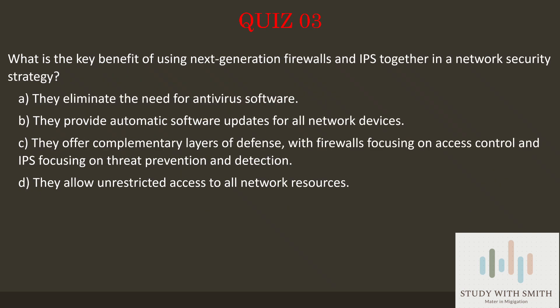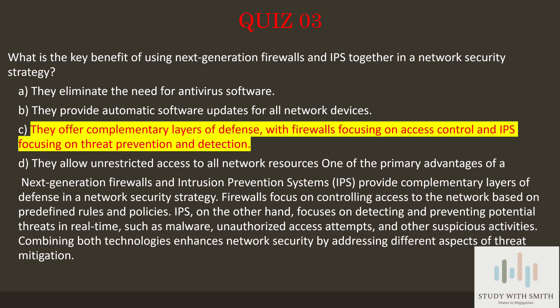Let's proceed to the next question. Let's go to question 3. What is the key benefit of using Next Generation Firewalls and IPS together in a network security strategy? Pause the video now to select the best answer. The answer is C: they offer complementary layers of defense, with firewalls focusing on access control and IPS focusing on threat prevention and detection.